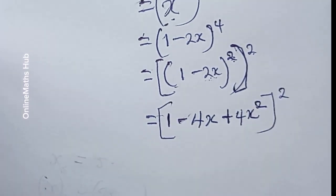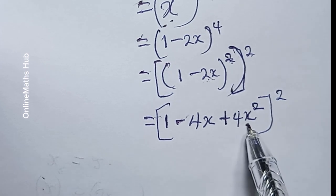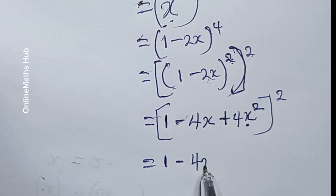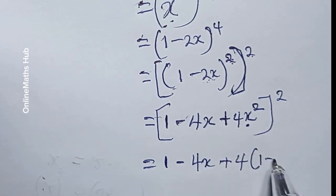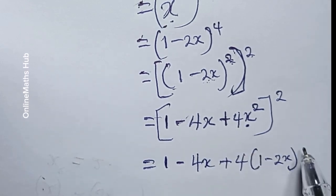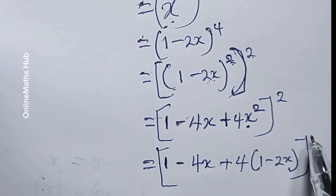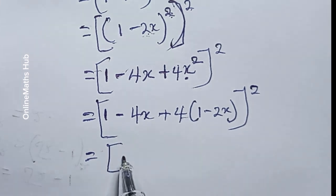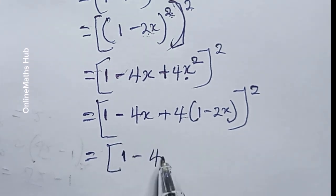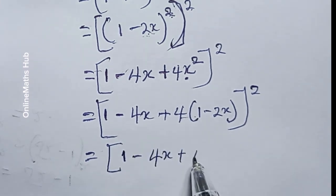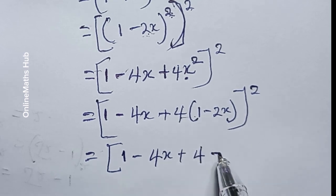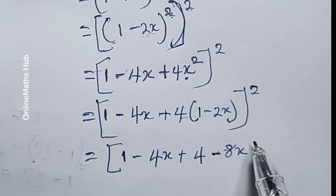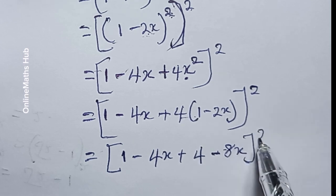We have the expression 4x squared, which I'll replace with 4 times (1 minus 2x). So inside the bracket we now have 1 minus 4x plus 4 times 1 which is 4, and 4 times minus 2x which is minus 8x. All raised to power 2.